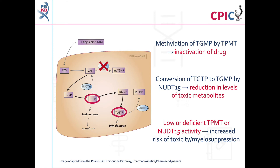If a patient has low or deficient TPMT activity, more TGMP molecules are available for conversion into active thioguanine nucleotide metabolites. This leads to increased amounts of active thioguanine nucleotide metabolites and puts the patient at an increased risk of severe or fatal toxicity and myelosuppression. It should be noted that some adverse reactions to thiopurine treatment, including pancreatitis and hepatotoxicity, are not linked to TPMT activity.